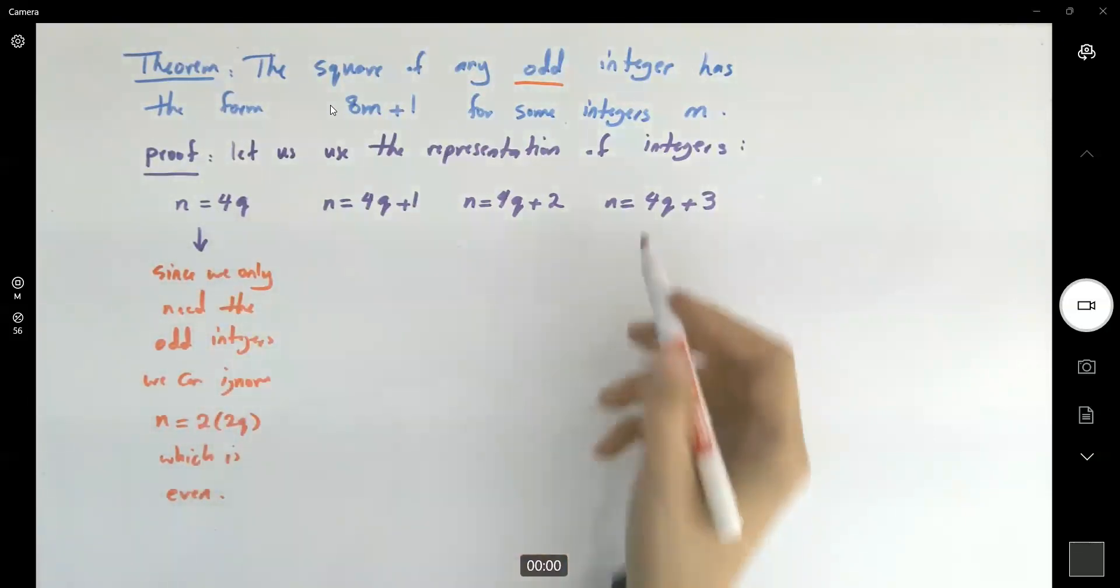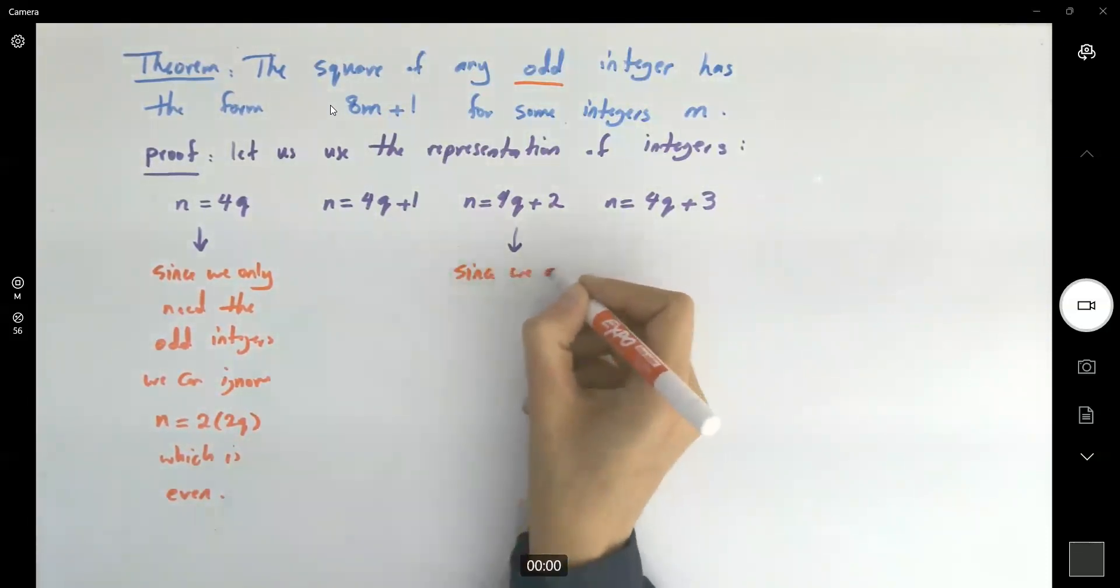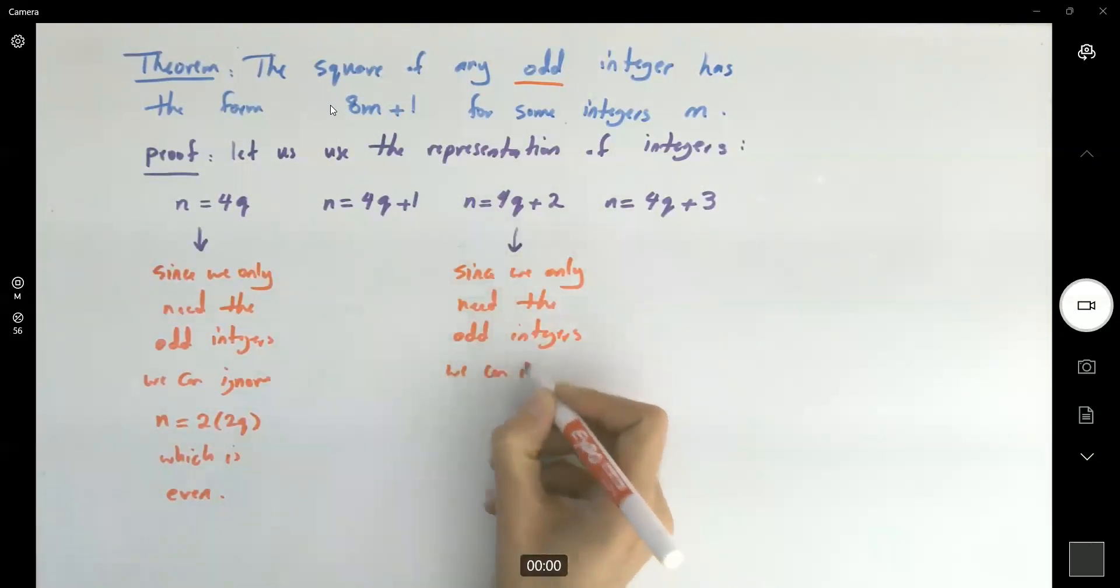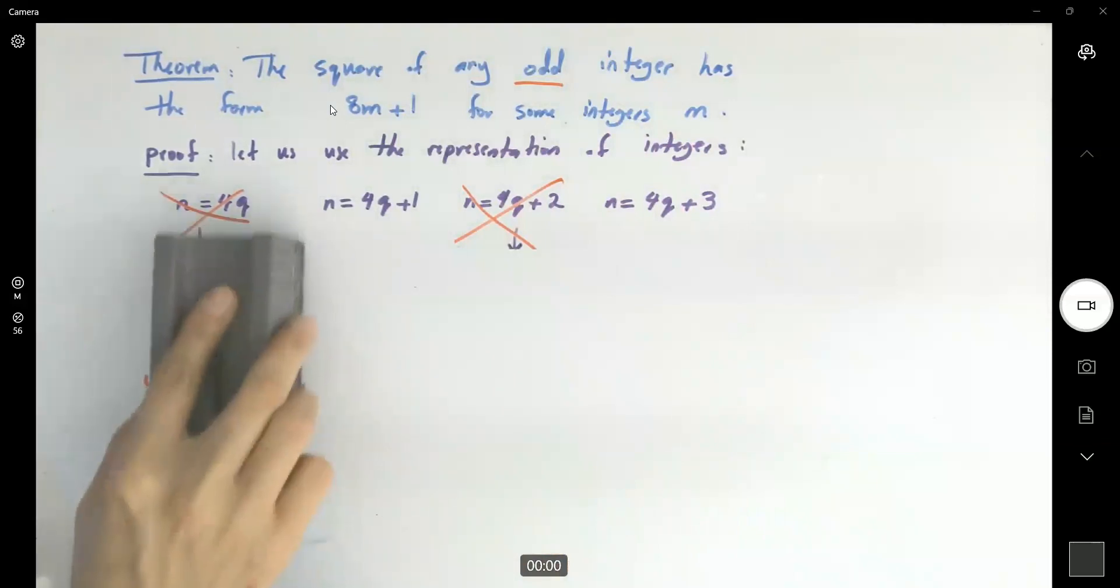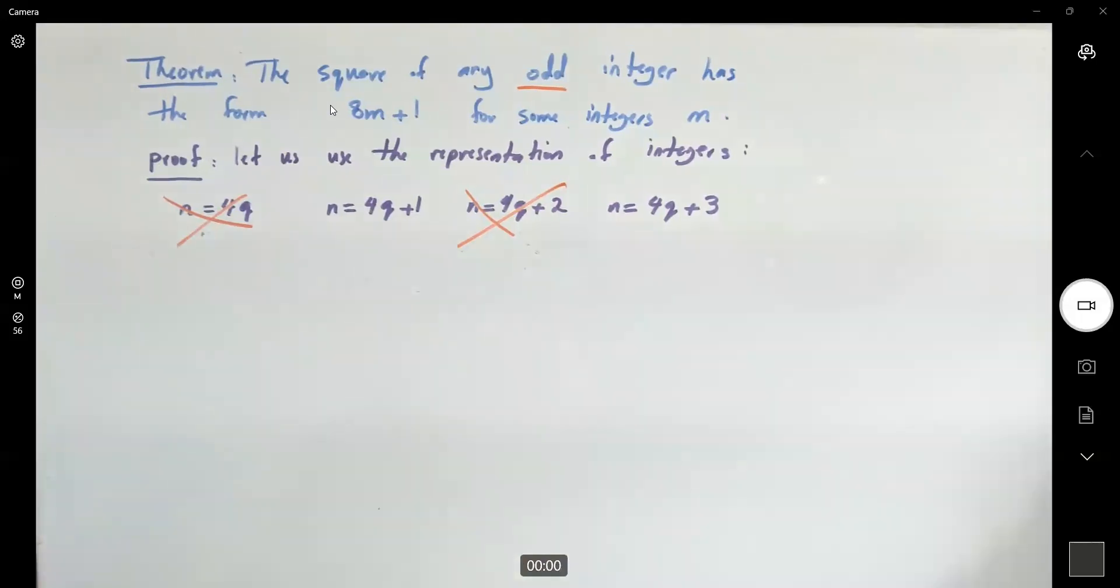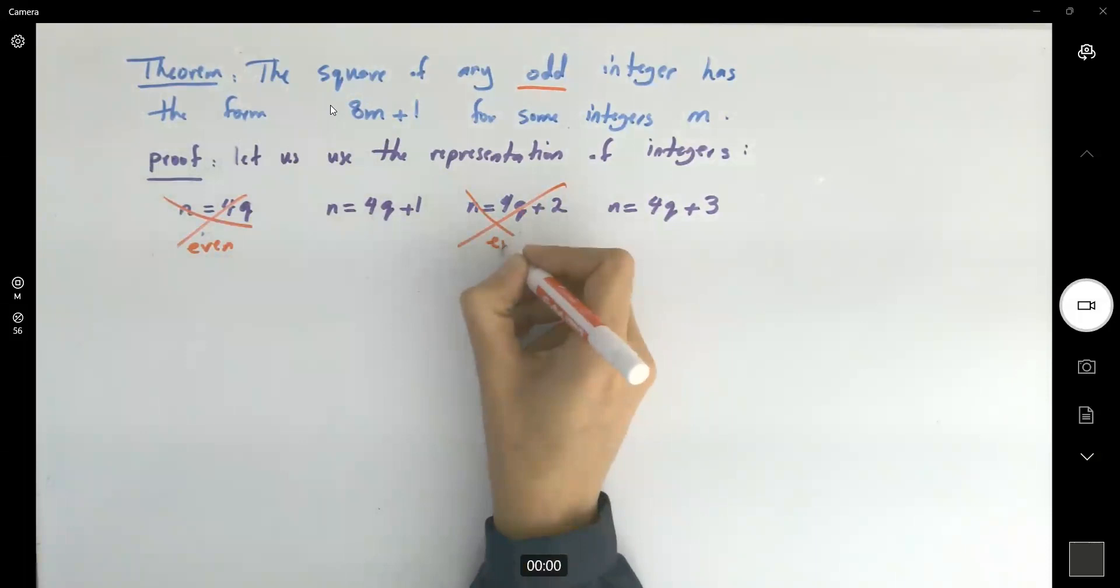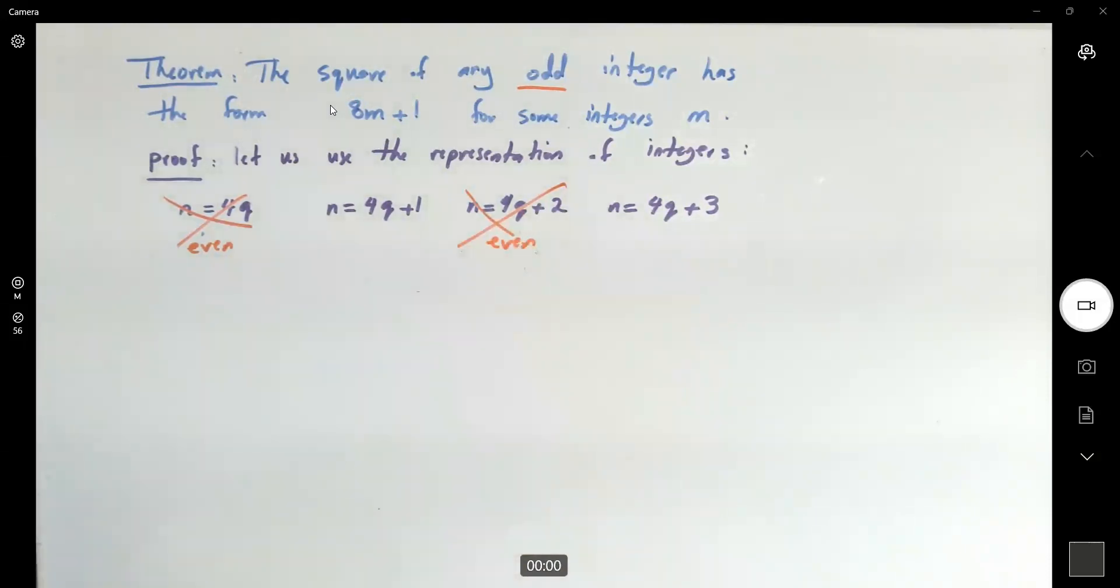By that discussion you can ignore 4q plus 2 as well. Since we only need the odd integers, so far we learned that we don't need these two representations because we only need to focus on odd integers. So this is an even integer and this is another even integer. Then n is equal to 4q plus 1. What do we have?